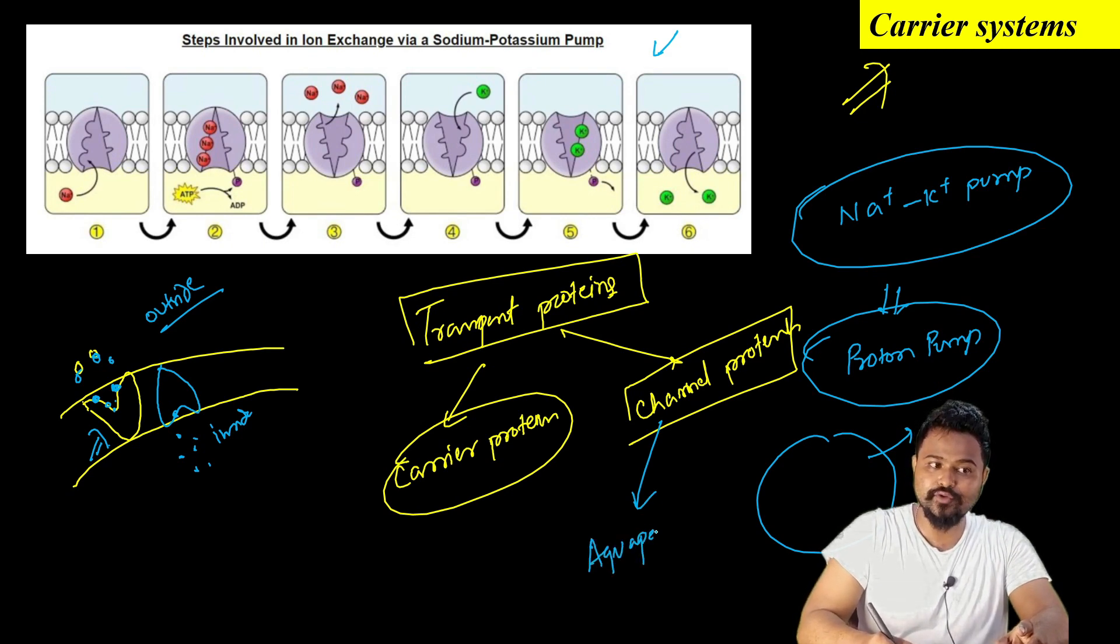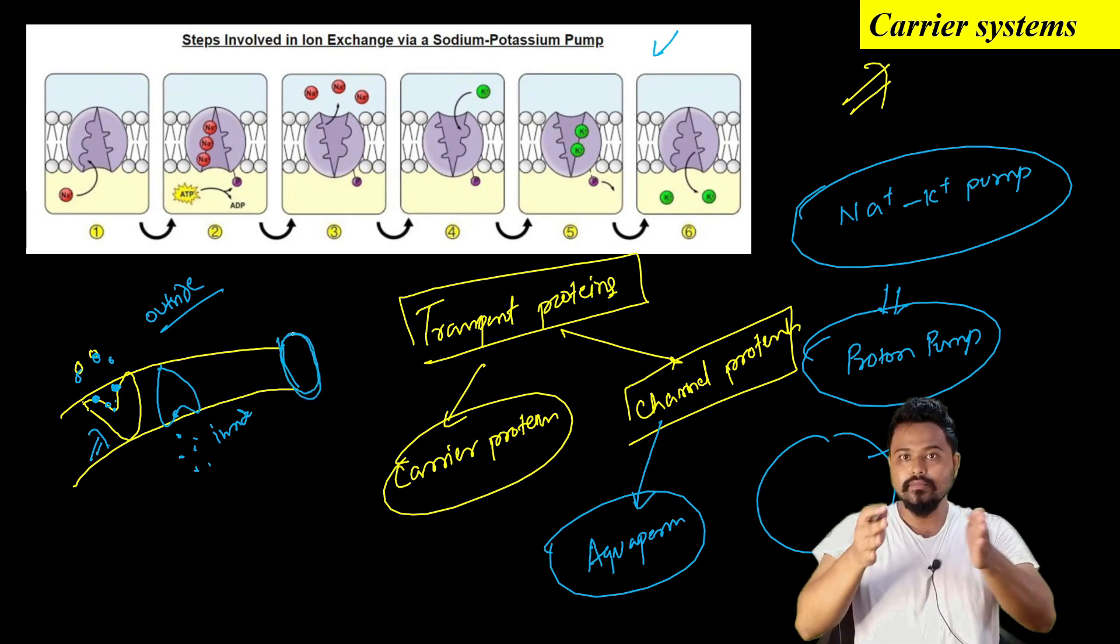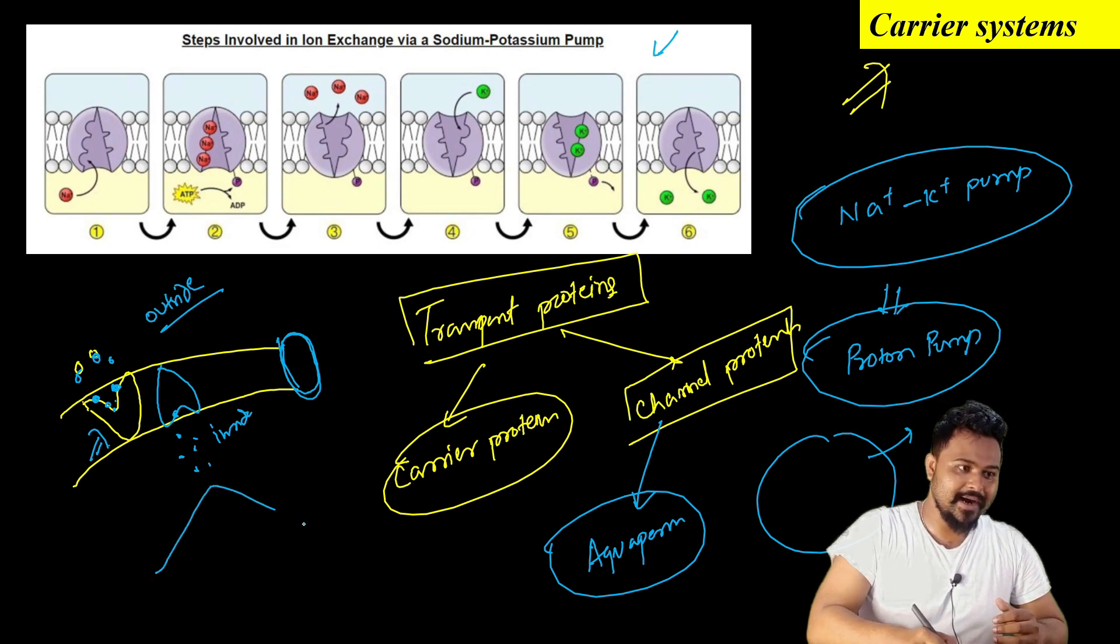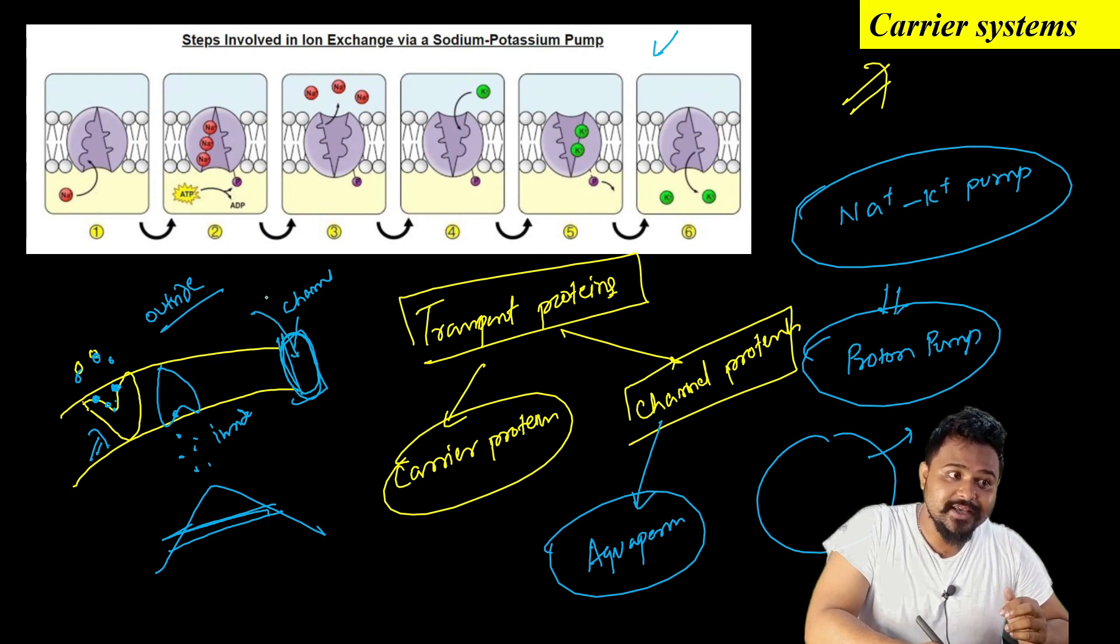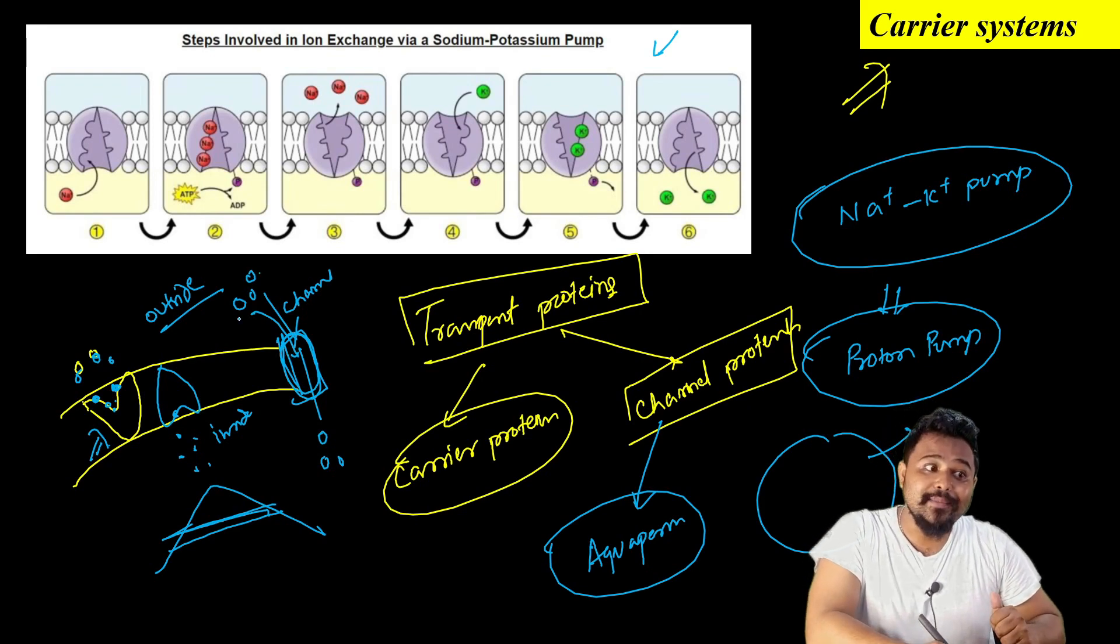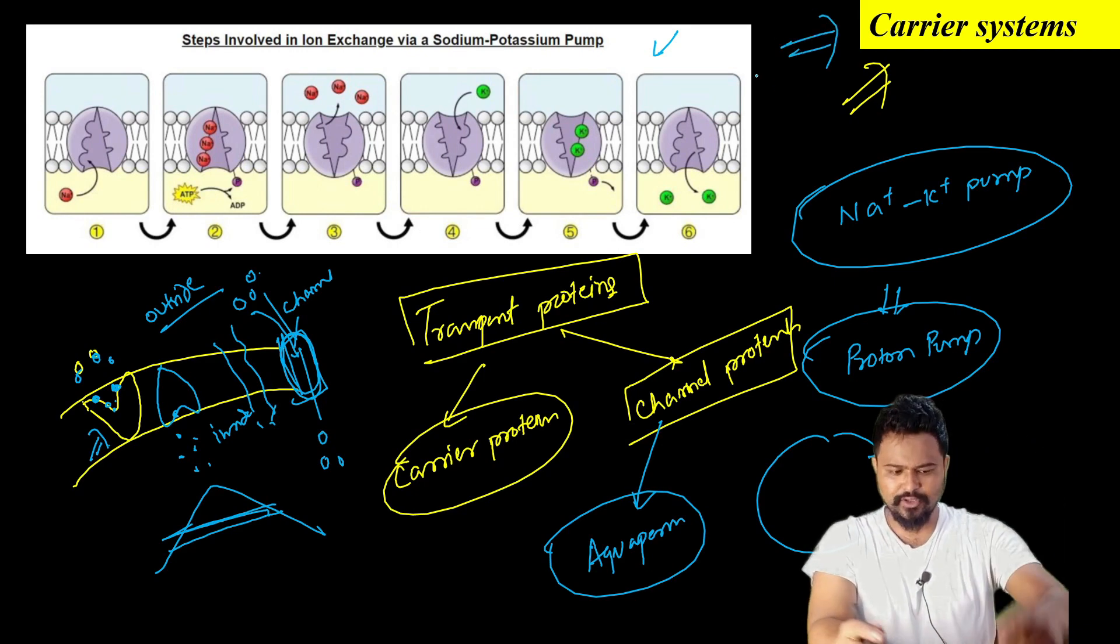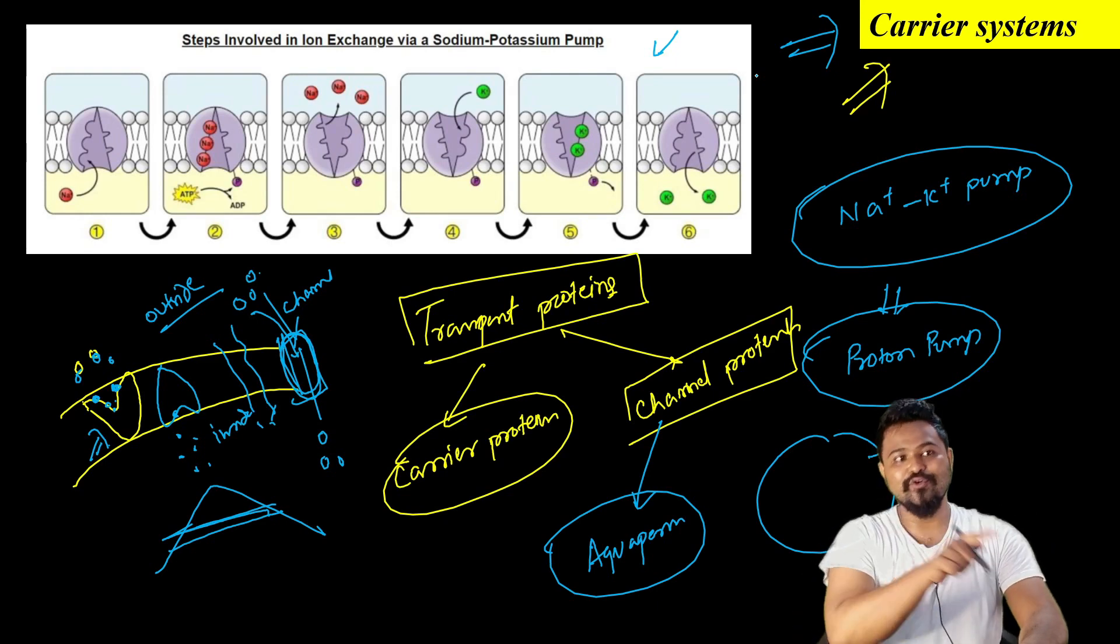Channel proteins are another type. Channel proteins in the cell membrane form actual channels - pores with a special structure. The cell membrane uses these special carrier systems to transport substances through the channels.